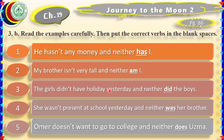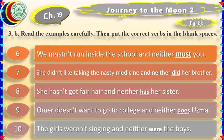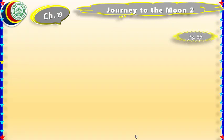Continuing the solutions: 'The girls didn't have a holiday yesterday and neither did the boys.' 'She wasn't present at school yesterday and neither was her brother.' 'Umar doesn't want to go to college and neither does Uzma' — 'does' is used here because 'doesn't' is in the original sentence. 'We mustn't run inside the school and neither must you.' 'She didn't like taking the nasty medicine and neither did her brother.' 'She hasn't got a fever and neither has her sister.' 'The girls weren't singing and neither were the boys.'